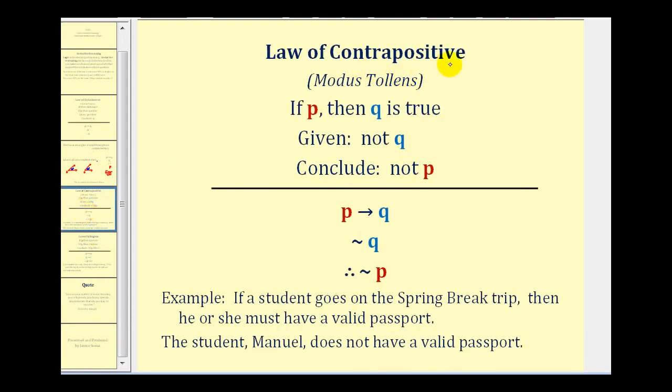The law of contrapositive or modus tollens says if P then Q is true, given not Q, we can conclude not P. Again using notation we have if P then Q is true, not Q therefore not P. And this is a valid form of deductive reasoning.